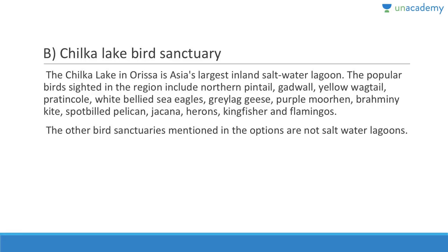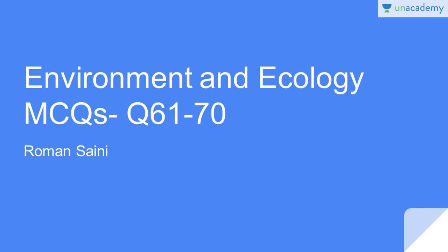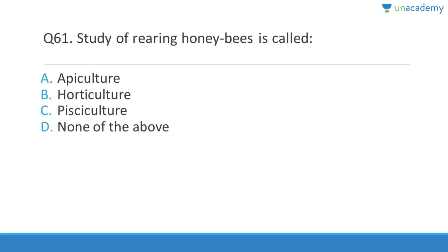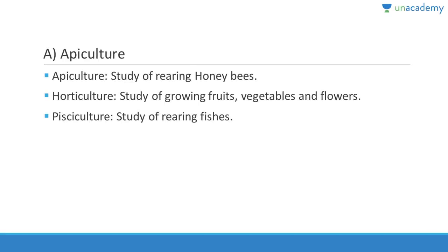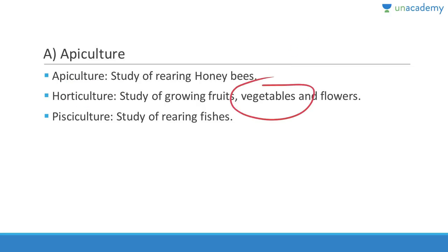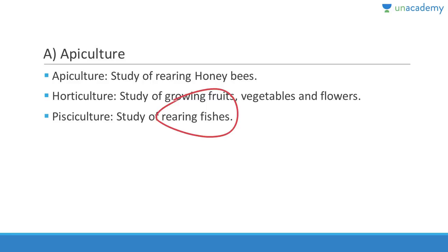Let us discuss questions 61 to 70. Many of you have already watched this course and thousands have enrolled. Question sixty-one: The study of rearing honeybees is called apiculture — no doubt about it. This is a very common question. Horticulture is related to vegetables, fruits, ornamental plants, and flowers — not traditional agriculture. Pisciculture is related to fishes; pisces is the term used for fishes.